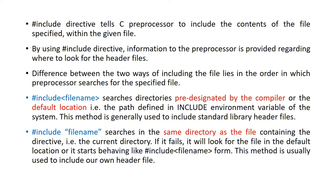In the second form — hash include with the file name within quotes — it searches in the same directory as the file containing the directive, that is the current directory. If it fails, it will look for the file in the default location, and starts behaving like the hash include with angular brackets form. This method is usually used to include our own header files in the program.